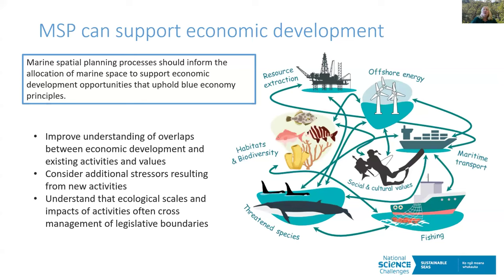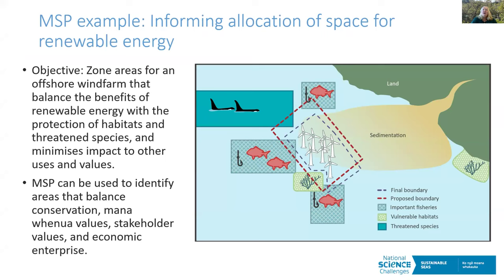Marine spatial planning is quite often used to support economic development by determining where new industries are best placed. MSP can improve understanding of overlaps between economic development and existing activities and values, and consider the additional stressors and stressor interactions resulting from new activities. One important thing to think about is that a lot of our legislative boundaries — for example, the territorial sea boundary and the EEZ — don't necessarily match up with ecological scales. Many activities actually cross these boundaries, so when looking at economic development we need to consider activity that crosses different boundary types.